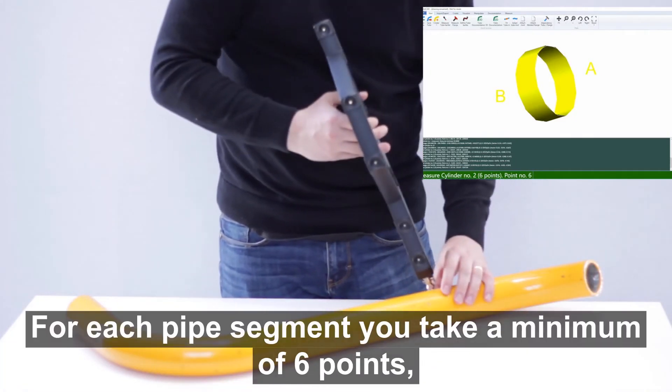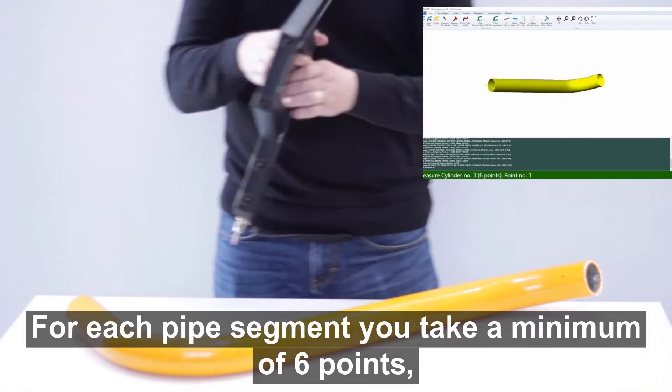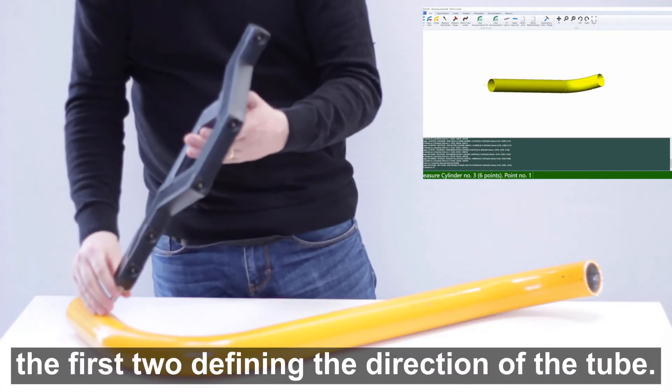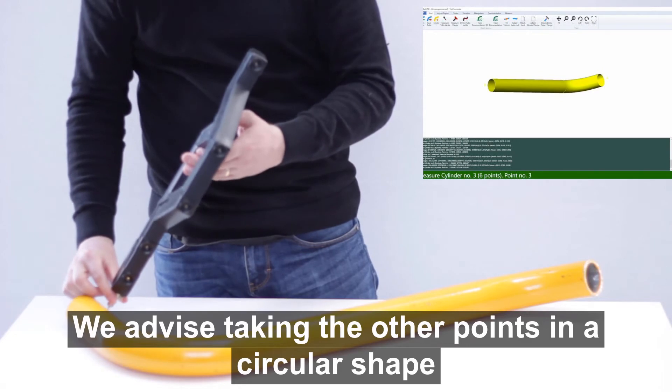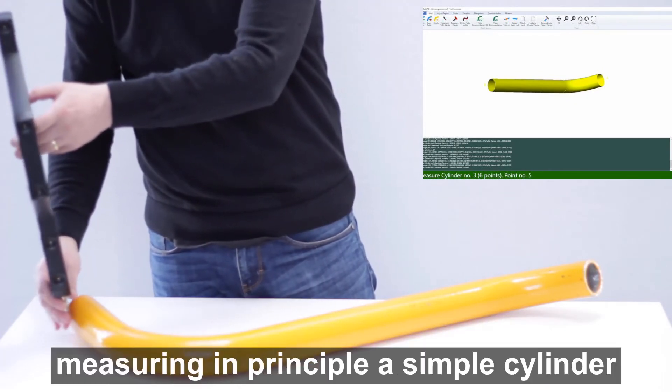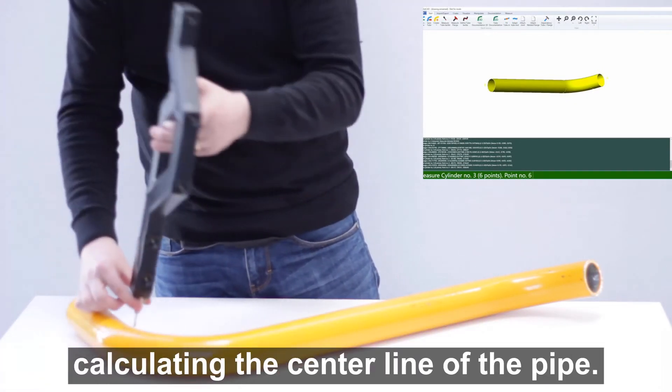For each pipe segment, you take a minimum of six points, the first two defining the direction of the tube. We advise taking the other points in a circular shape, measuring in principle a simple cylinder, calculating the center line of the pipe.